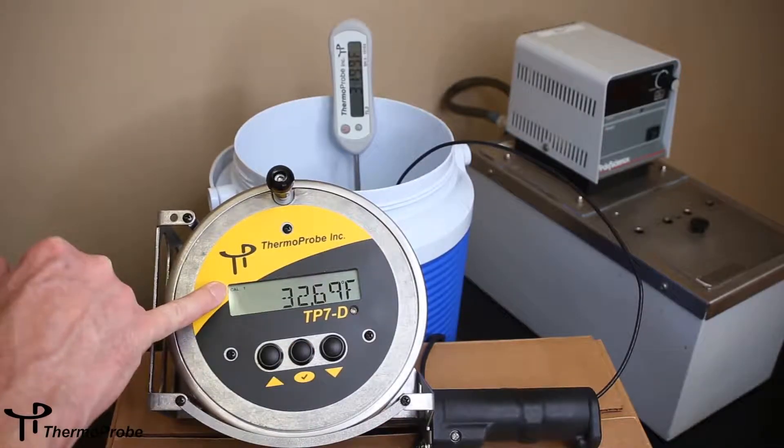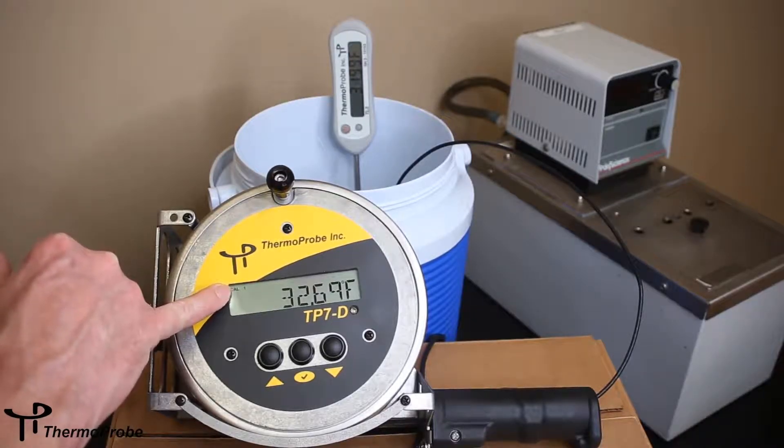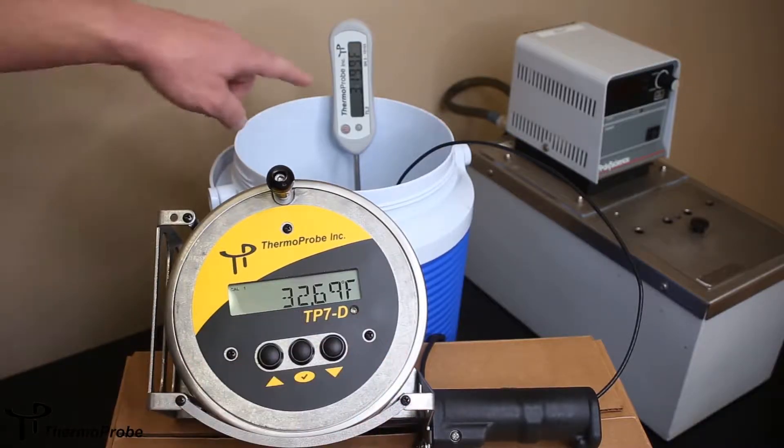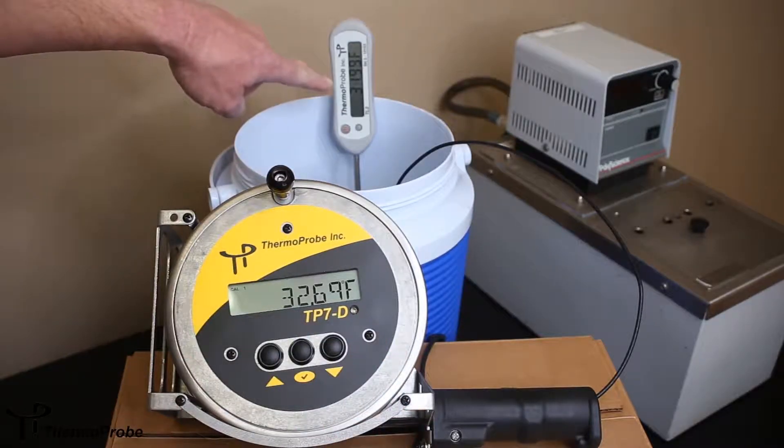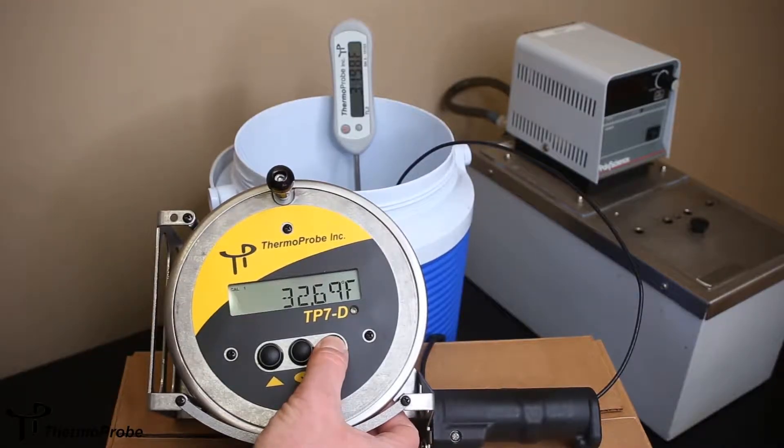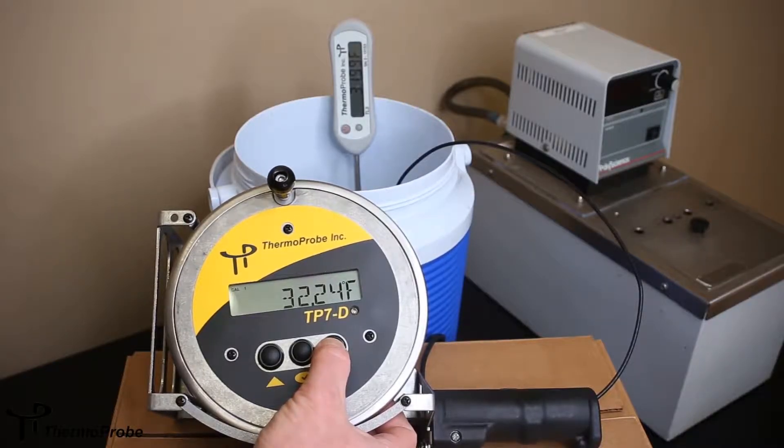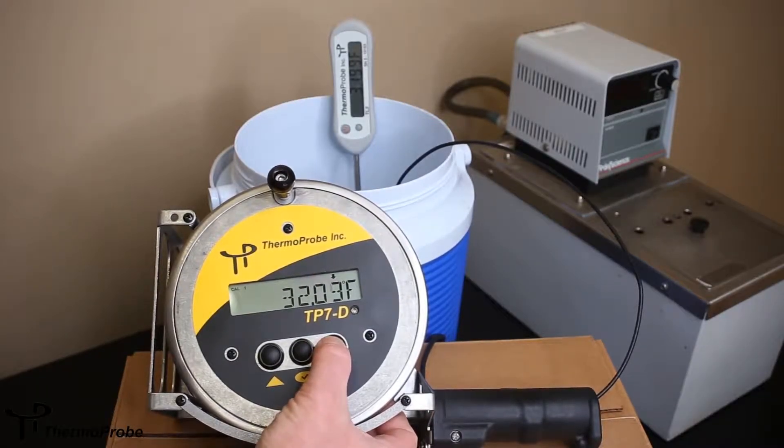Again, you can see that I'm in calibration mode, and I'm doing calibration point one. At this point, we need to use our up and down arrows to adjust our temperature readout to match that of our reference. We're reading 31.99 and 98 in our ice bath right now. So, we're going to bring the temperature down. If you hold the button a long time, it will increase the adjustment very quickly. Momentary presses will adjust it only in the hundredths precision. So, 31.99.